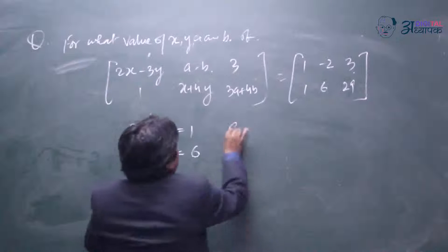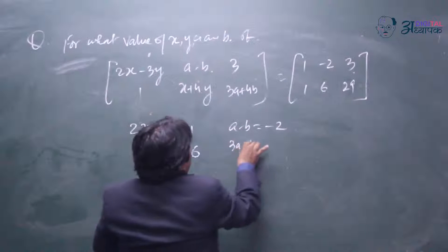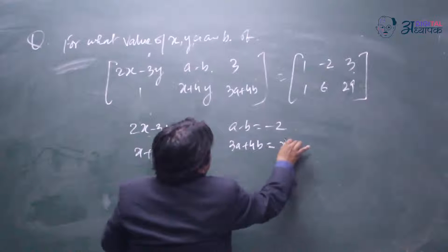Then we have to compare a minus b is equal to minus 2, and 3a plus 4b is equal to 29.